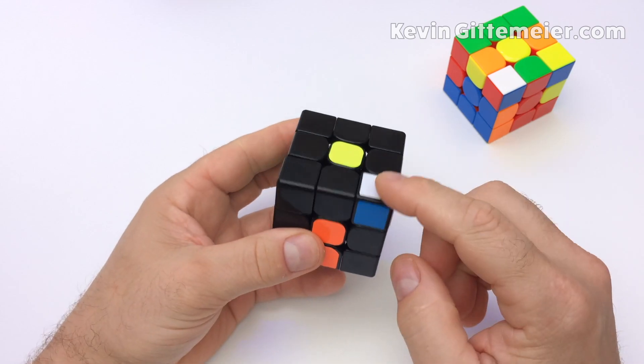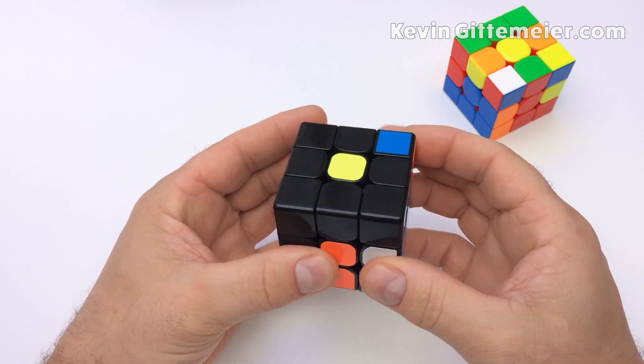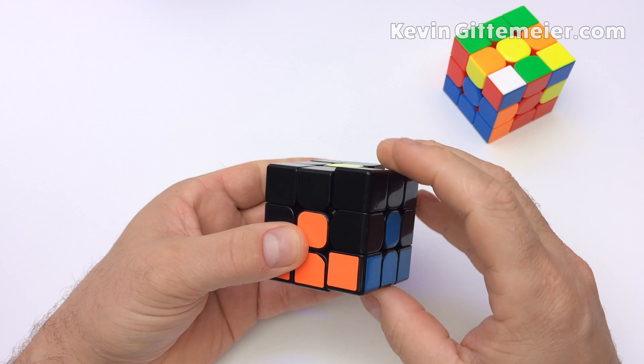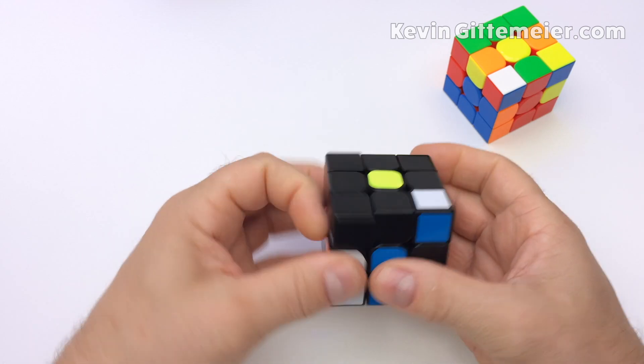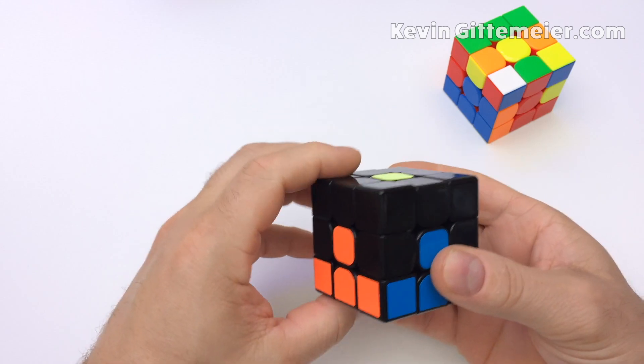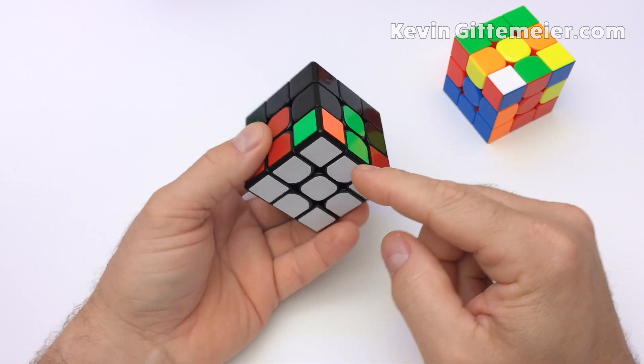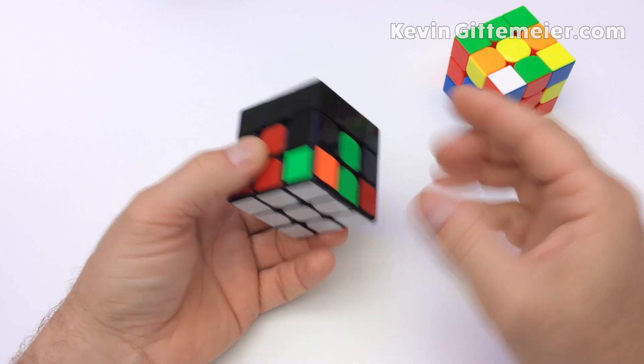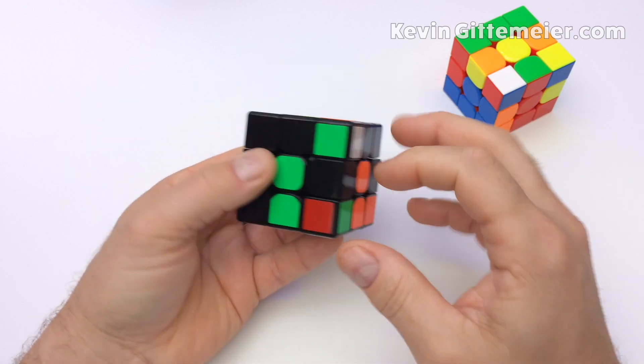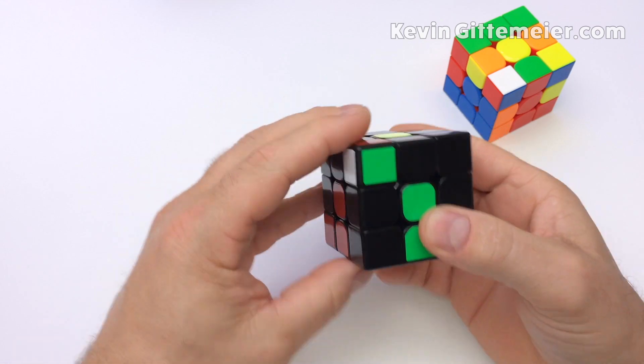What you want to do is just bring that white sticker down any number of ways. You can do it right, up, up, right prime and then just insert it like you normally would. Or from the other side. If a white corner is on the bottom but in the incorrect location, just kick it out any way you like. Move it to the right spot and insert like you normally would.